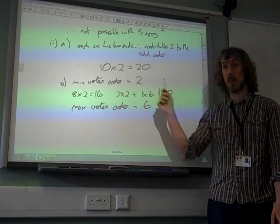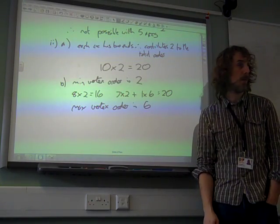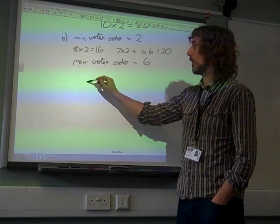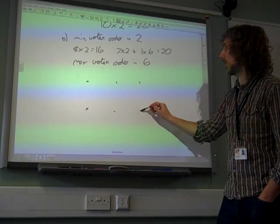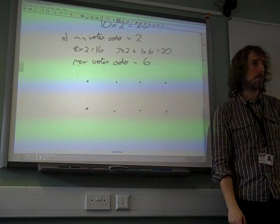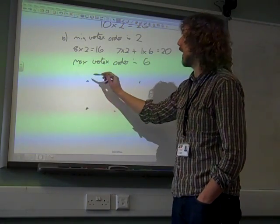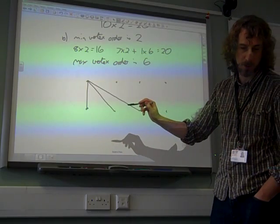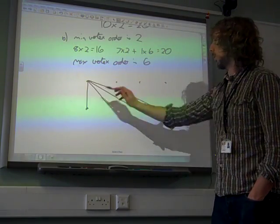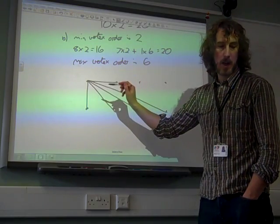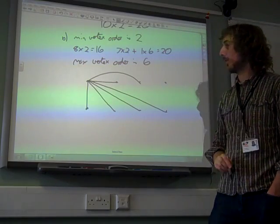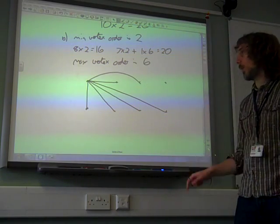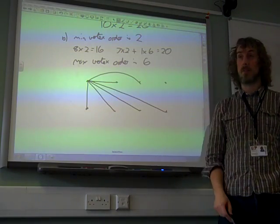And we've got, from this little calculation here, that we now need to try and draw a graph where one of the vertices has order six, and the other seven each have order two. If we can do that, then we'll sort it. And, of course, there are lots of different ways to draw this. But we need one of them to be order six, so I'm going to make this one here have order six. One, two, three, four, five, and six.